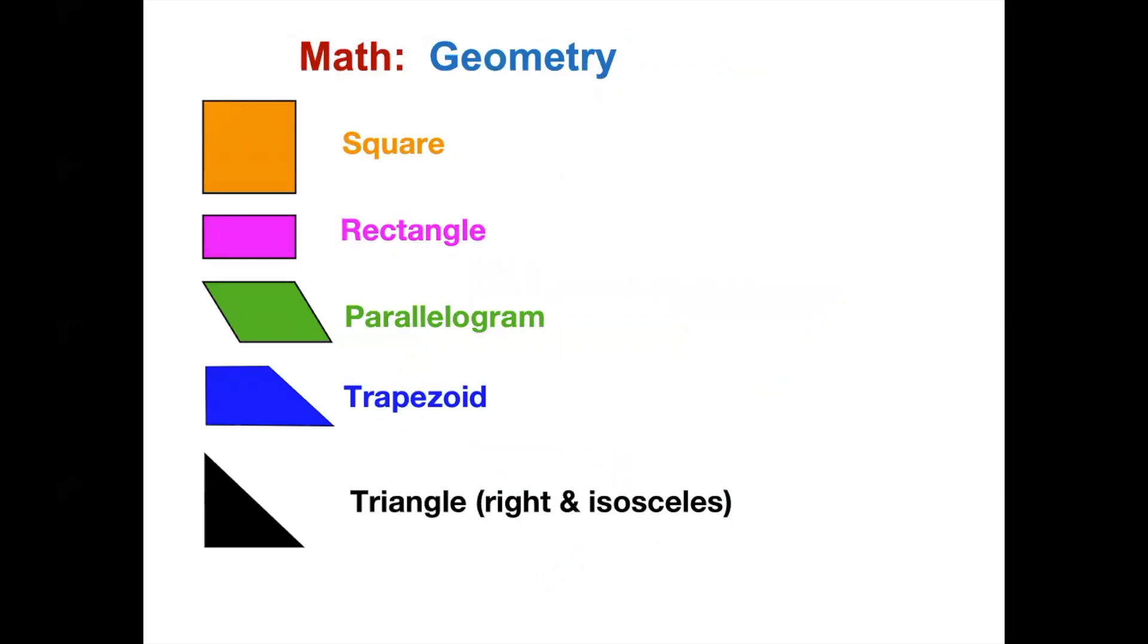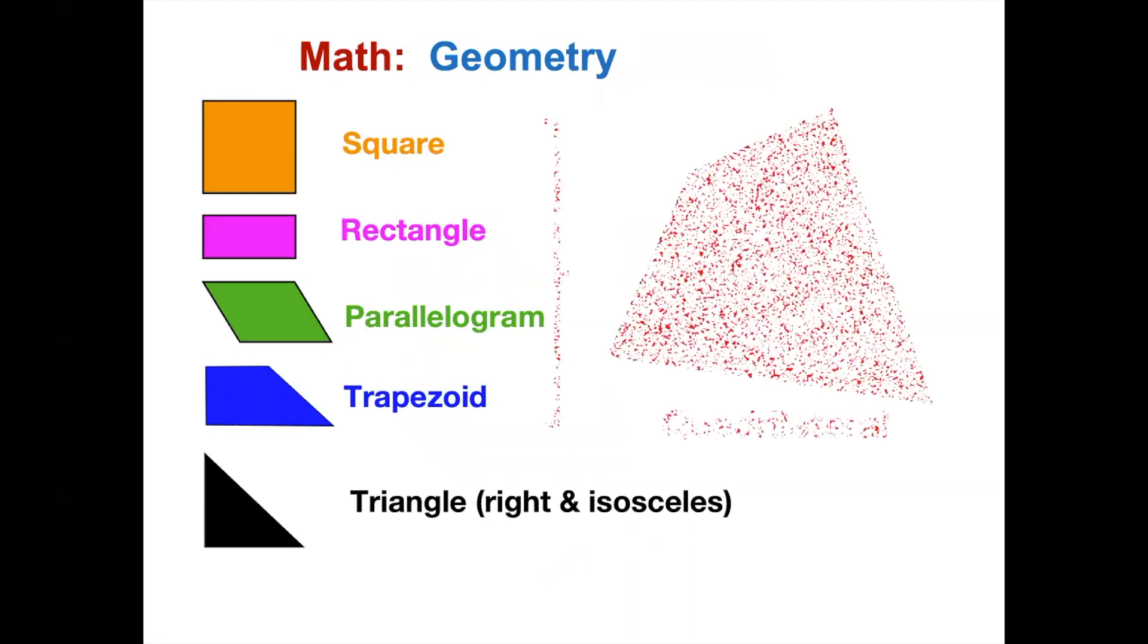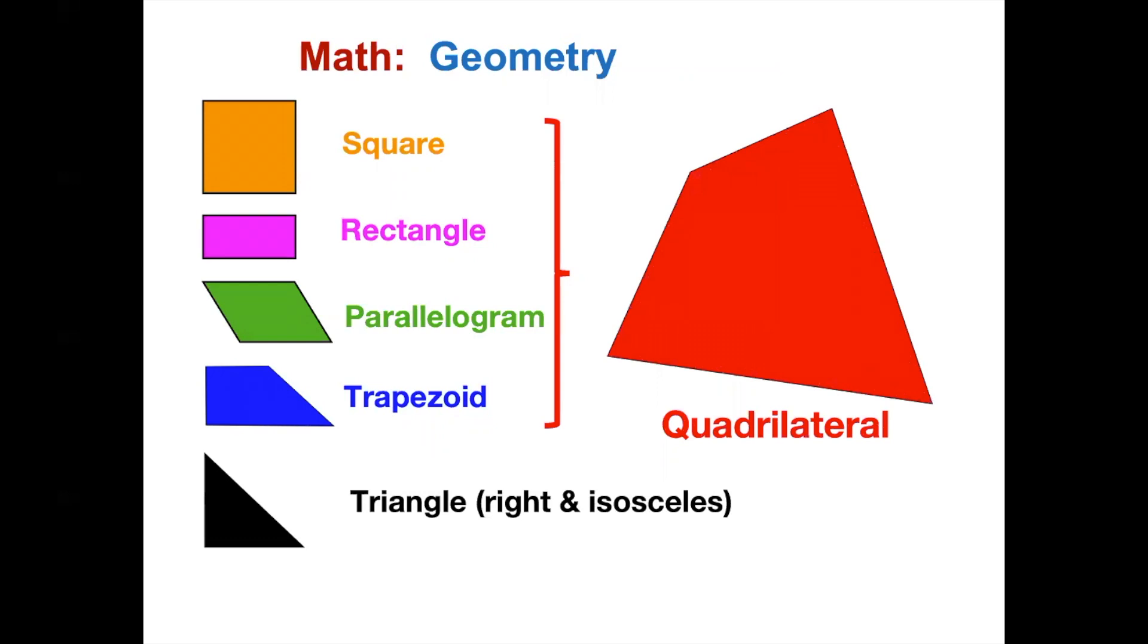In the folding and assembly process, we saw a square, rectangle, parallelogram, trapezoid, and a triangle. The triangle is both a right triangle and isosceles triangle. Any shape that has four sides is called quadrilateral. The top four shapes belong to this same category.